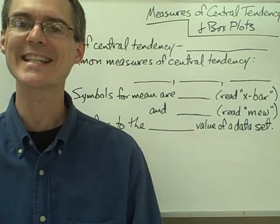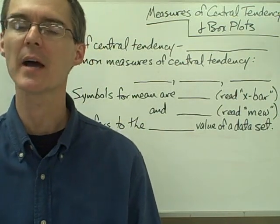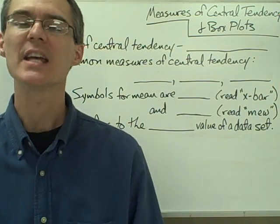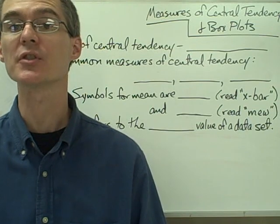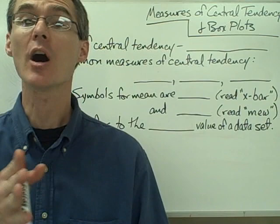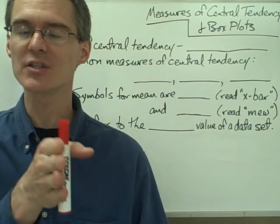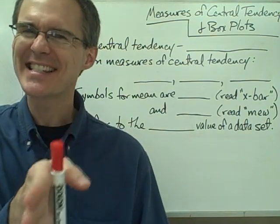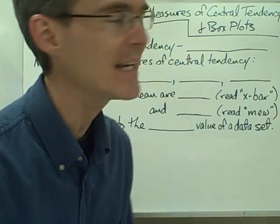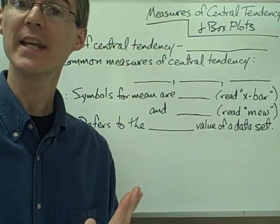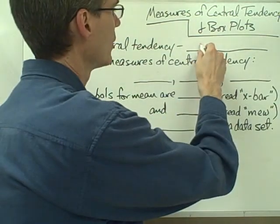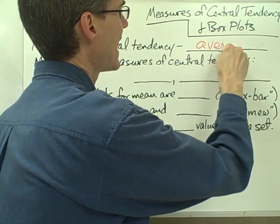This video is on measures of central tendency and box plots. Anytime you have a data set, a set of numbers, it's often very useful to be able to summarize that data set using just one number. Often the number you want to use to describe it identifies the center of the data set — what's the middle? Any number that describes the middle or center of a data set, we call that a measure of central tendency or an average.